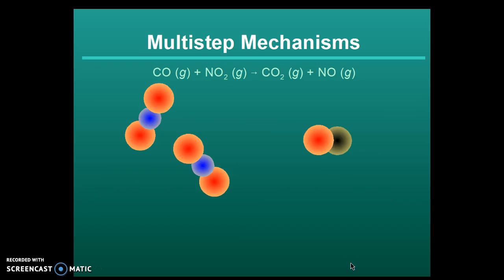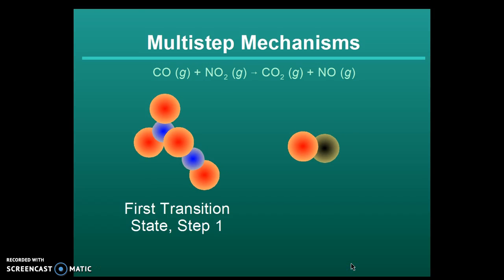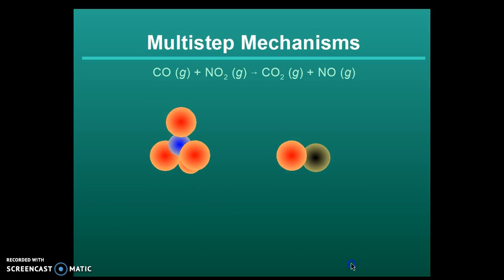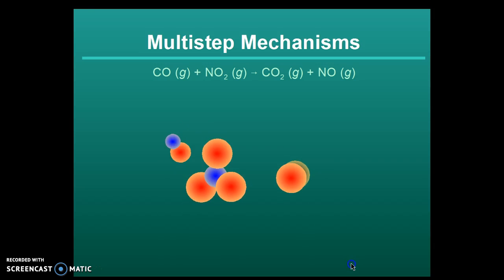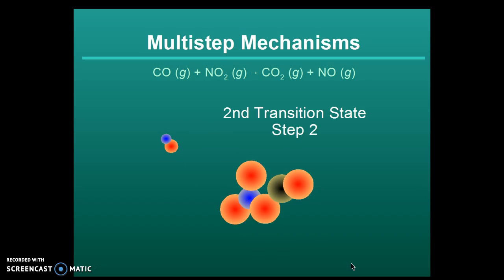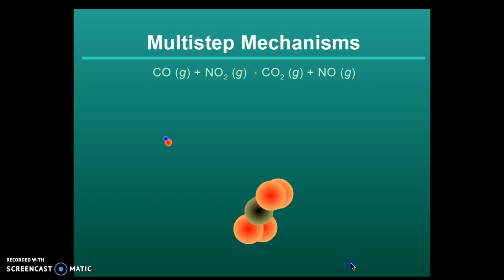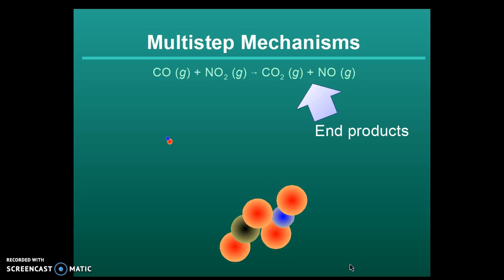Here is a diagram of the multi-step mechanism. As you can see, the nitrogen dioxide molecules collide and make the first transition, and then the nitrogen trioxide collides with the carbon monoxide and you see an oxygen exchange and the production finally of the CO2 and NO2 end products.